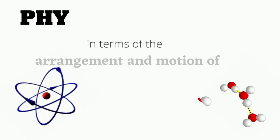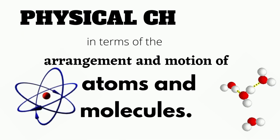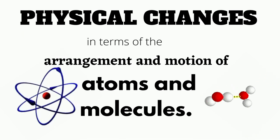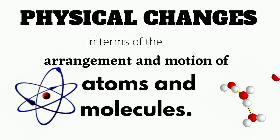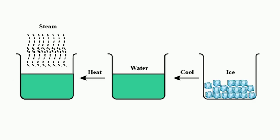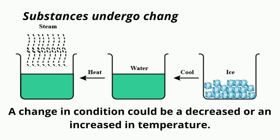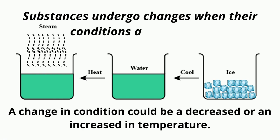This video lesson explains physical changes in terms of the arrangement and motion of atoms and molecules. Substances undergo changes when their conditions are changed. A change in condition could be a decrease or an increase in temperature.